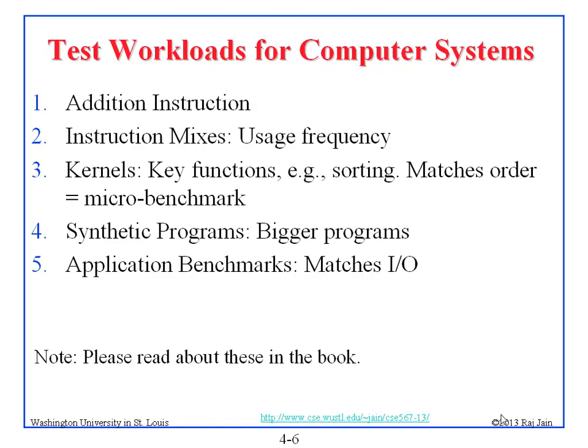The history of benchmarking: when computing started, performance was measured by a single instruction — for example, 500 ADD instructions per second versus 700 on another computer. ADD and branch were the key instructions. As instruction sets became more complex, people started measuring instruction frequencies — 10% ADD, 15% multiply, 20% divide — and set up a benchmark workload with exactly those percentages, weighting performance accordingly. Then they realized instruction order mattered too, so they started putting in real code.